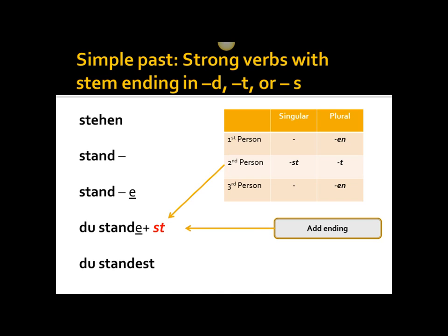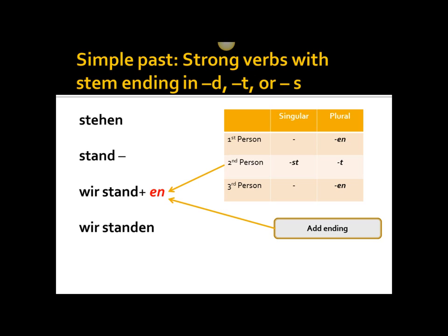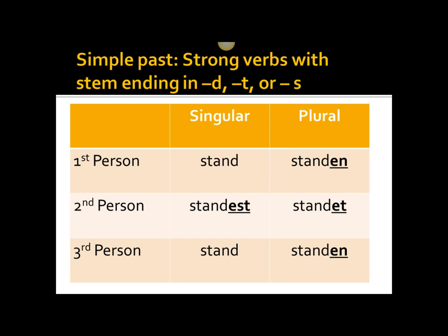This, however, is not going to be the case if we're not conjugating the second person singular or plural — everything else remains essentially the same. For example, wir standen — we don't have to insert an extra E. Here is the close-up of the verb stehen in the simple past: ich stand, du standest, er/sie/es stand, wir standen, ihr standet, sie standen. And that's the simple past using German strong verbs.